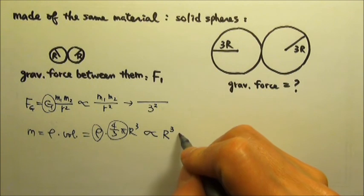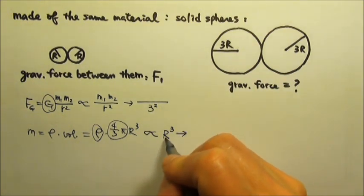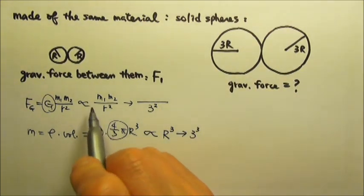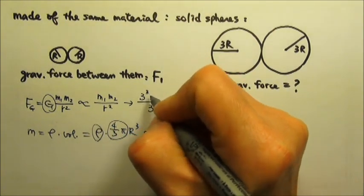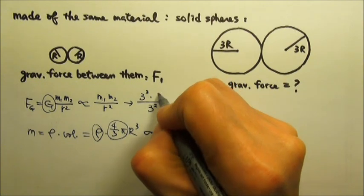This is 3R, so the mass changes by a factor of 3 cubed. And that's the mass of one sphere, 3 cubed. And that one, same factor.